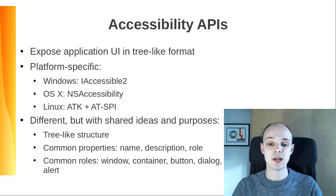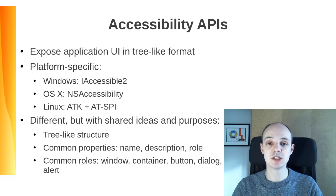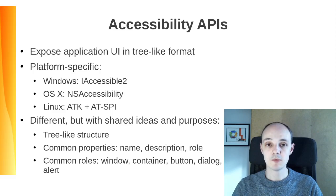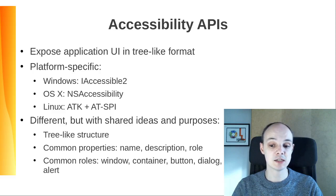They share the tree-like structure and common properties like name, description, and role. Role is an important property that defines the expectations regarding the behavior of a UI component and also defines its API. Common roles are Window, Container, Button, Dialog, Alert. They have different names in each of the different APIs but there are usually equivalent roles in each of them.